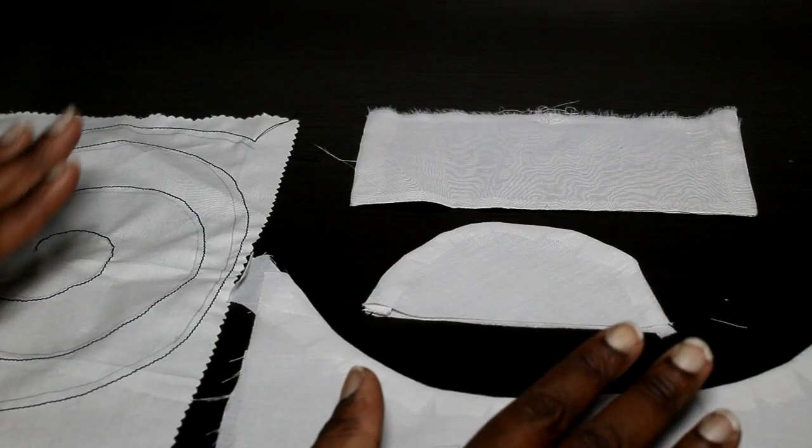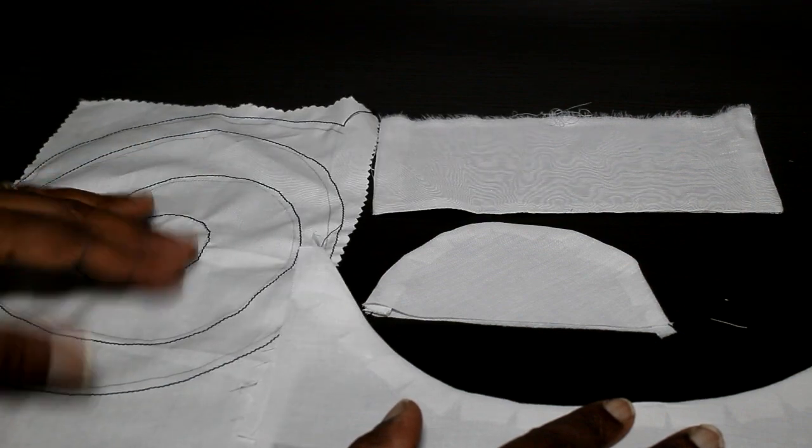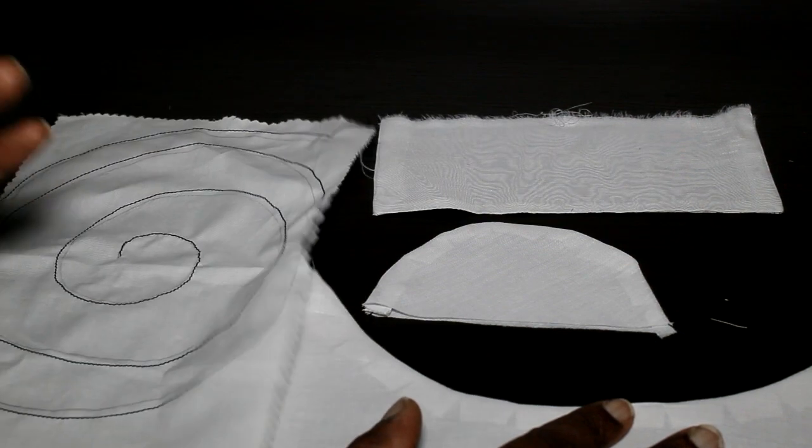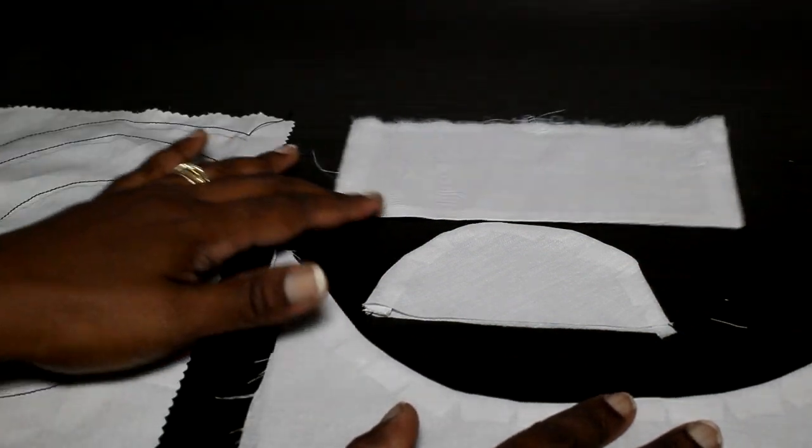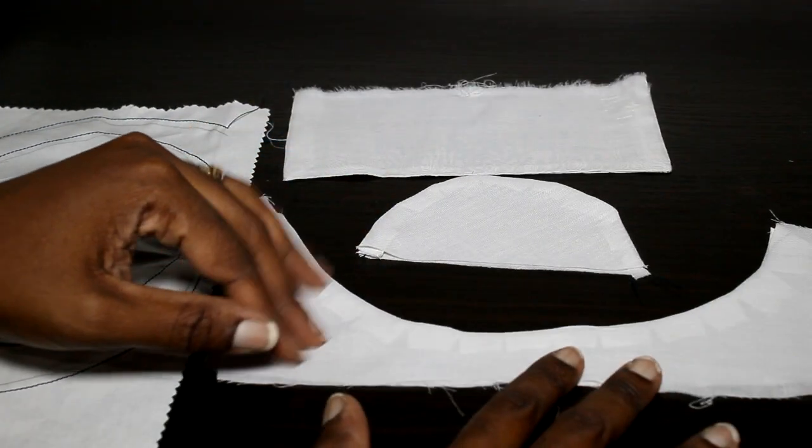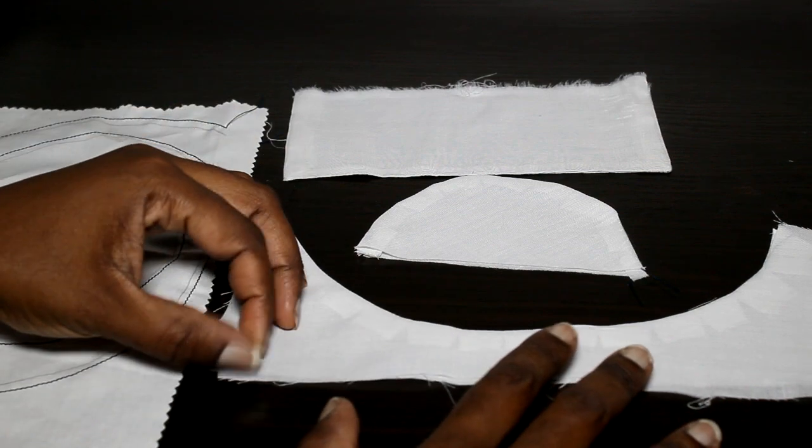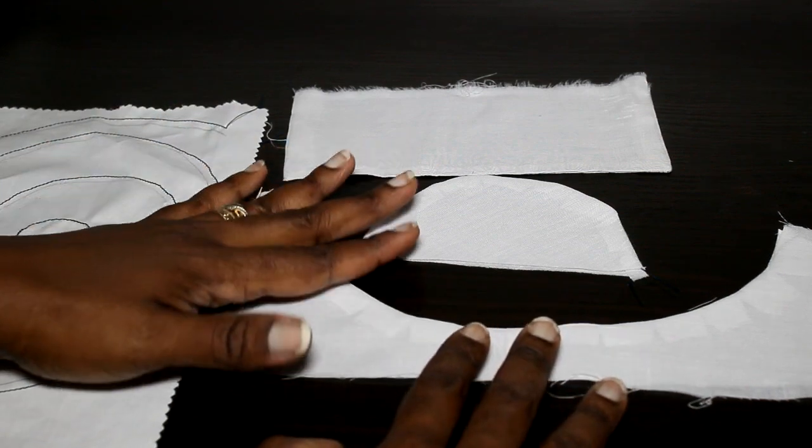So remember, you can make practice sheets like this. Draw some curved lines, draw some straight lines, and practice. Practice making your corners, practice sewing your curves. You can make an inner curve, you can make an outer curve, and practice sewing it. Also practice trimming and clipping and making your notches.